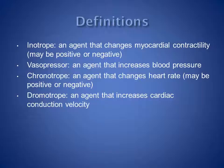An inotrope is any agent that changes myocardial contractility. Drugs may be a positive inotrope or have negatively inotropic effects. A vasopressor is an agent that increases blood pressure. The terms inotrope and vasopressor are in fact used pretty much interchangeably when referring to patients in ICUs.